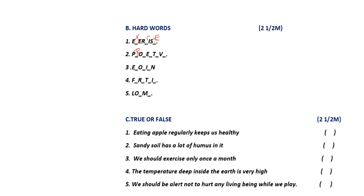Third one is erosion. The spelling of erosion is E-R-O-S-I-O-N. Fourth one is first aid — F-I-R-S-T-A-I-D. Fifth one is loamy, which is a type of soil — L-O-A-M-Y. So the answers are: first is exercise, second is protective, third is erosion, fourth is first aid, and the last one is loamy.